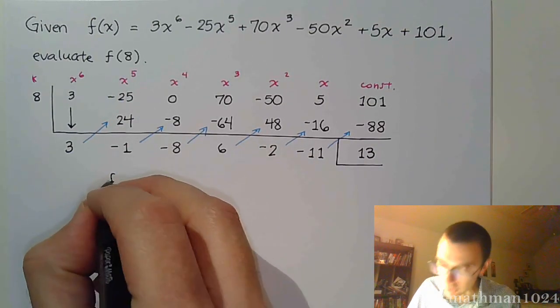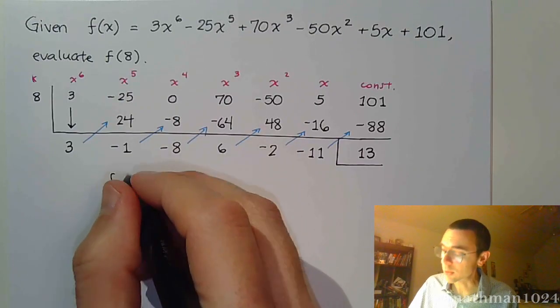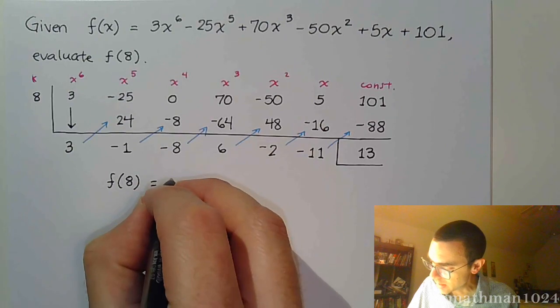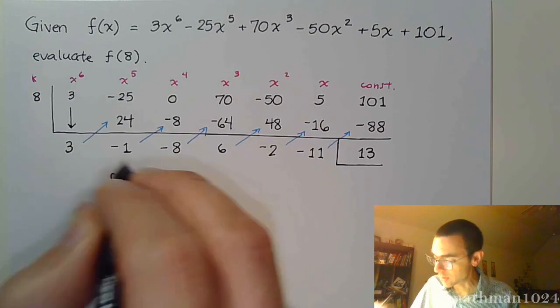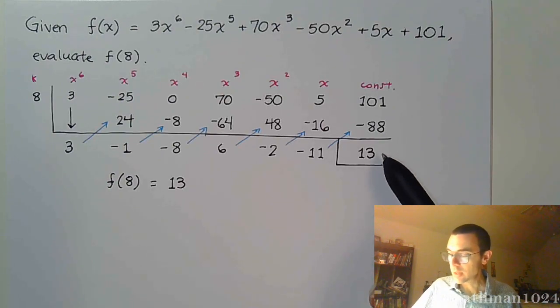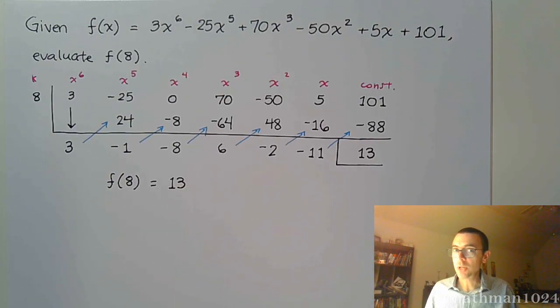So, that tells us, and this is how we are to express our final answer, that f evaluated at 8 is equal to 13. That's it. We don't actually have to replace all of the x's with 8. That's what the remainder theorem allows us to say, is that the remainder is that function value. Pretty simple.